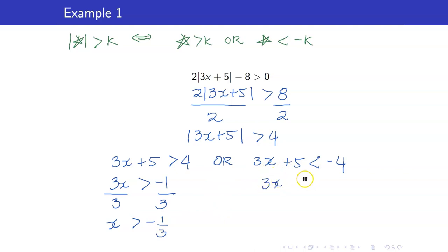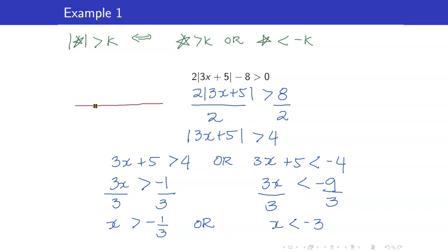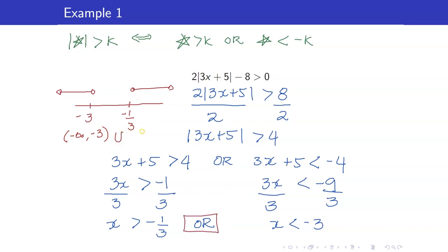Graphing this: we have x greater than negative 1/3, or x less than negative 3. In interval notation, this is negative infinity to negative 3, union negative 1/3 to infinity. Remember that 'or' always means union.